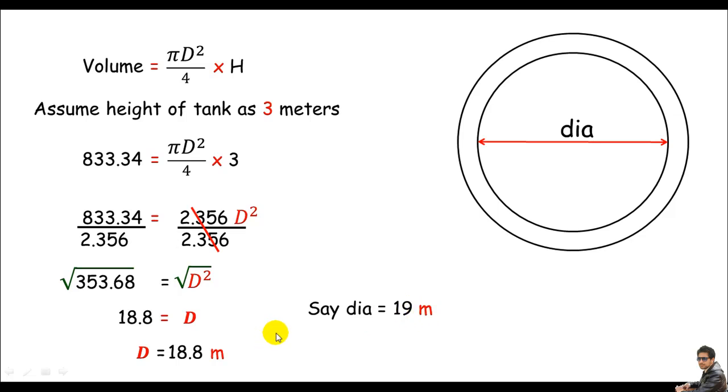Because 18.8 meter is of course the same as 19 meter. This is just so adjacent to 19. Only 20 centimeter is the difference, no problem. So, I think 19 meter is a better value for diameter.